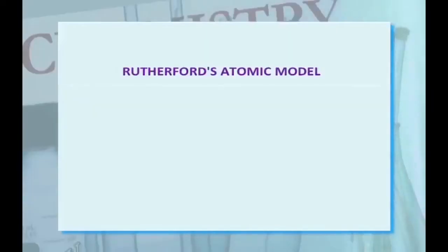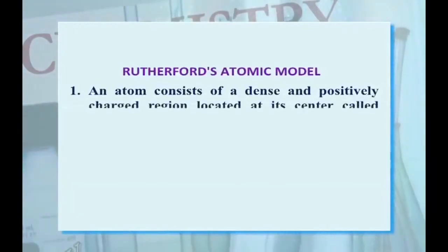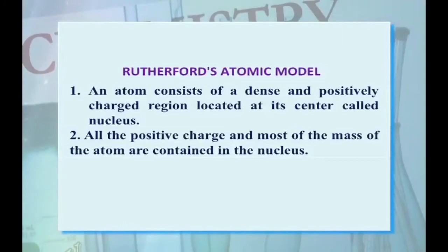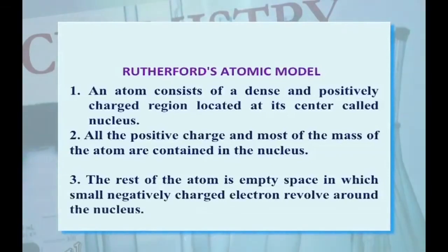On the basis of these observations, Rutherford proposed his atomic model: First, an atom consists of a dense and positively charged region located at its center called the nucleus. All the positive charge and most of the mass of the atom are contained in the nucleus. The rest of the atom is empty space in which small negatively charged electrons revolve around the nucleus.